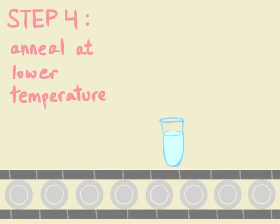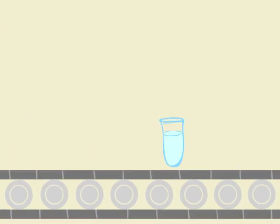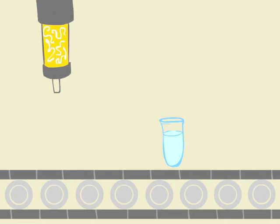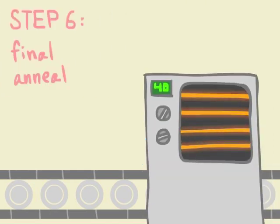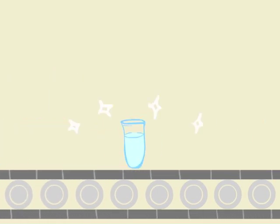We take this mixture for another anneal, this time only from a lower temperature to make sure we don't melt our template. Then, we add in the remaining L-DNA strands in the even rows to complete our mixture. Another low temperature anneal, and voila, we're done.